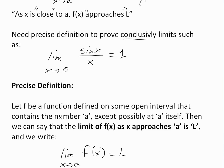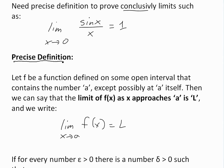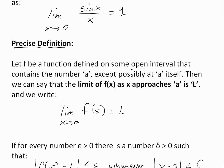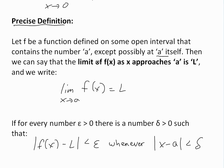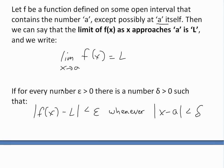The precise definition is a bit complex, but here it is: let f be a function defined on some open interval — meaning it doesn't have to equal on the ends, just inside — that contains the number a, except possibly at a itself, so it doesn't have to be defined at a. Then we say the limit of f of x as x approaches a is L if, for every number epsilon greater than 0, there is a number delta greater than 0, such that the absolute value of f of x minus L is less than epsilon whenever the absolute value of x minus a is less than delta.